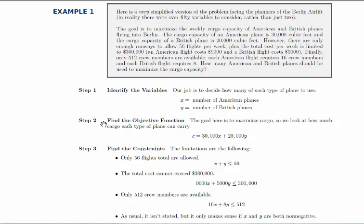Now, to find the objective function, again, we're trying to maximize cargo. So cargo is our objective function. The total cargo is the cargo carried by American planes plus the cargo carried by British planes. And since each American plane can carry 30,000 cubic feet, the total that American planes can carry is that 30,000 times the number of American planes there are. And similarly for the British planes. So that's our objective function. And again, we set that aside until near the end of the problem after we've dealt with the constraints.